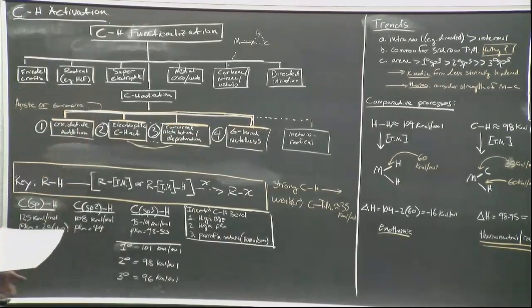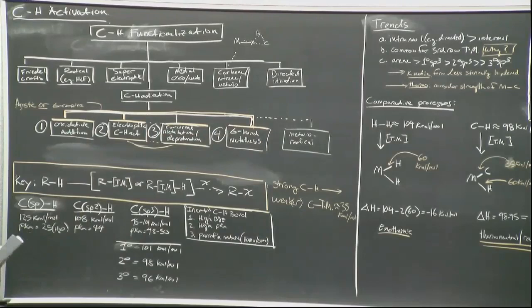When we come to CH activation specifically, the key thing is that you are discretely forming an intermediate or product that contains a transition metal–carbon bond. That is what separates CH activation from all the other elegant chemistry highlighted above. Within CH activation as an umbrella term, there are certain mechanistic regimes.